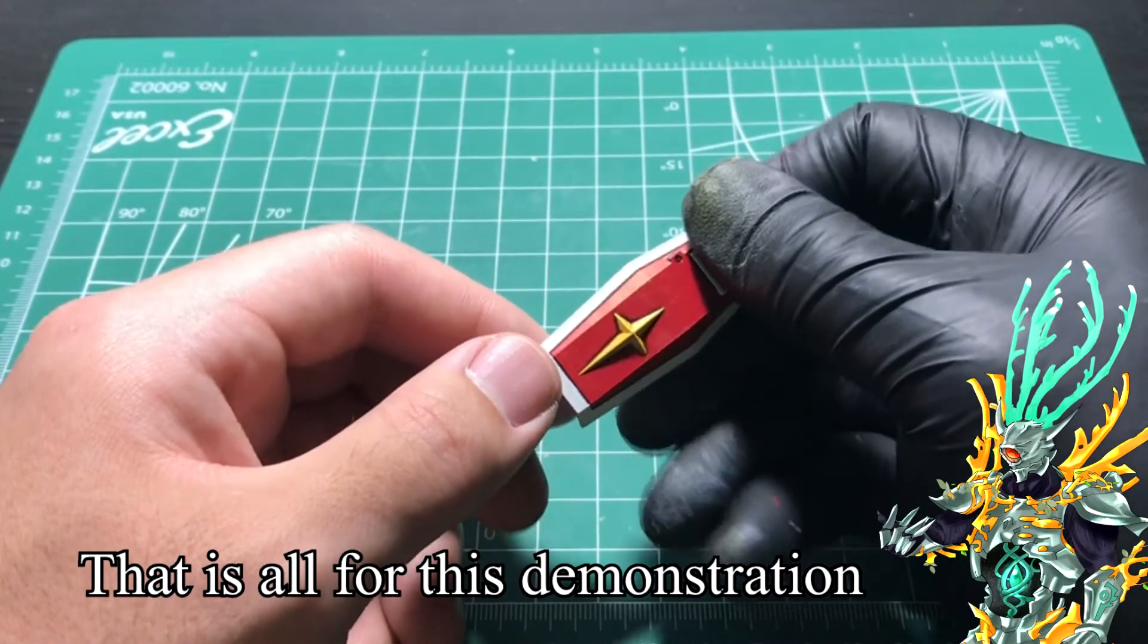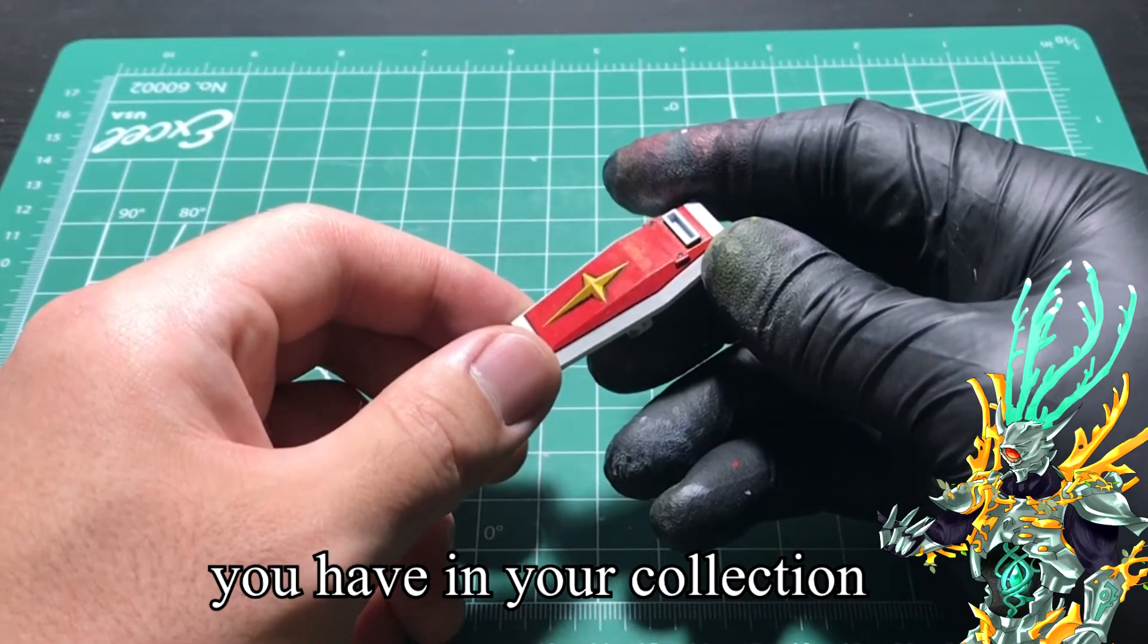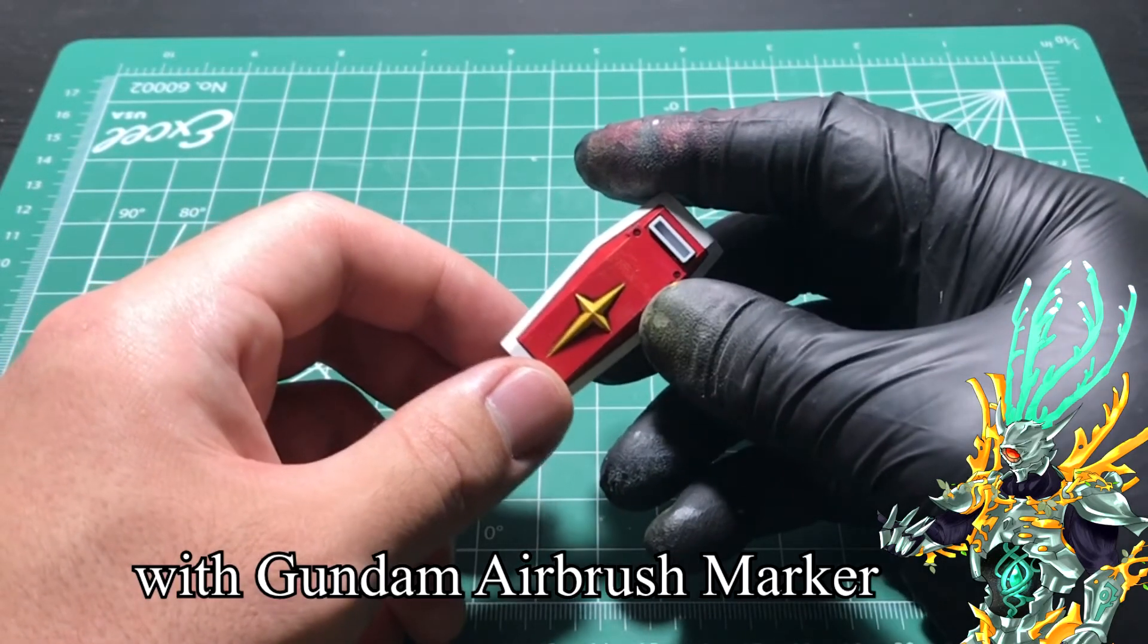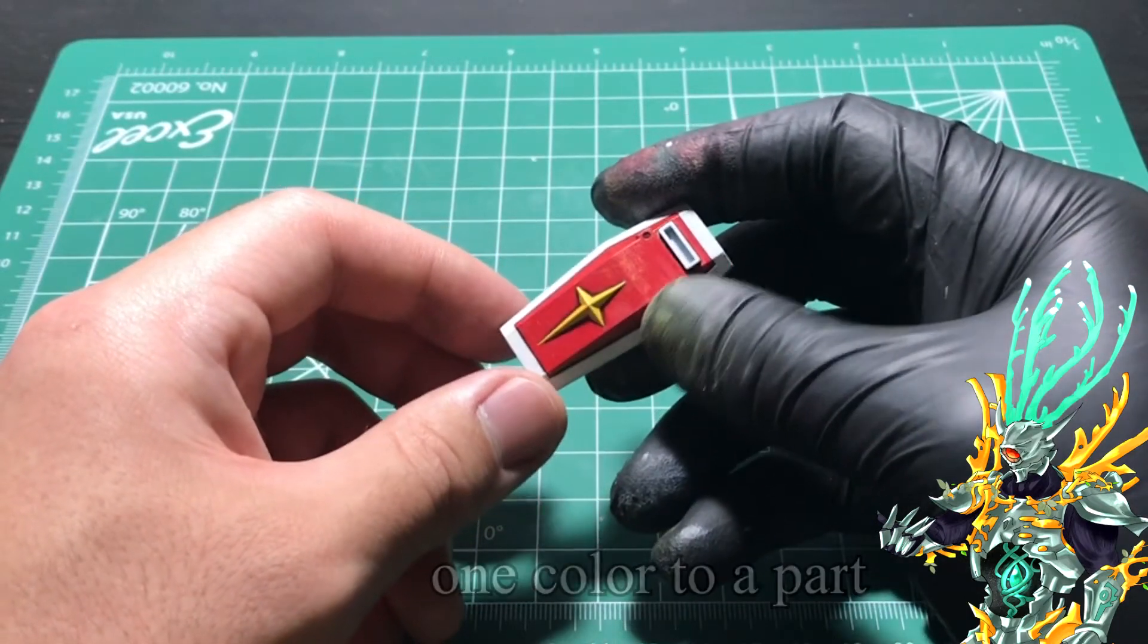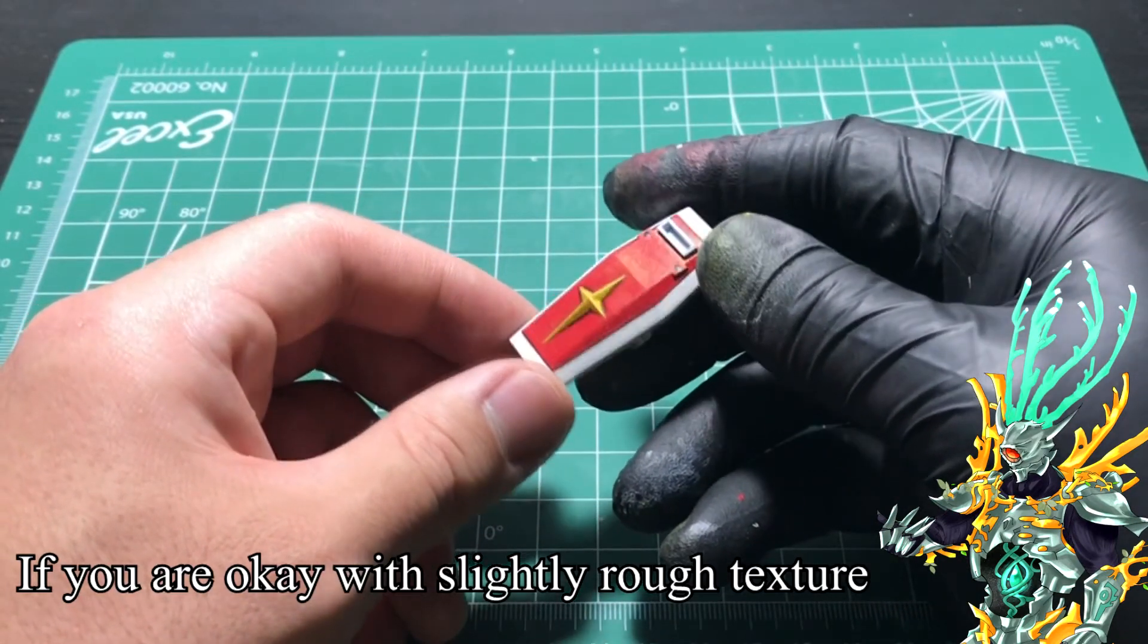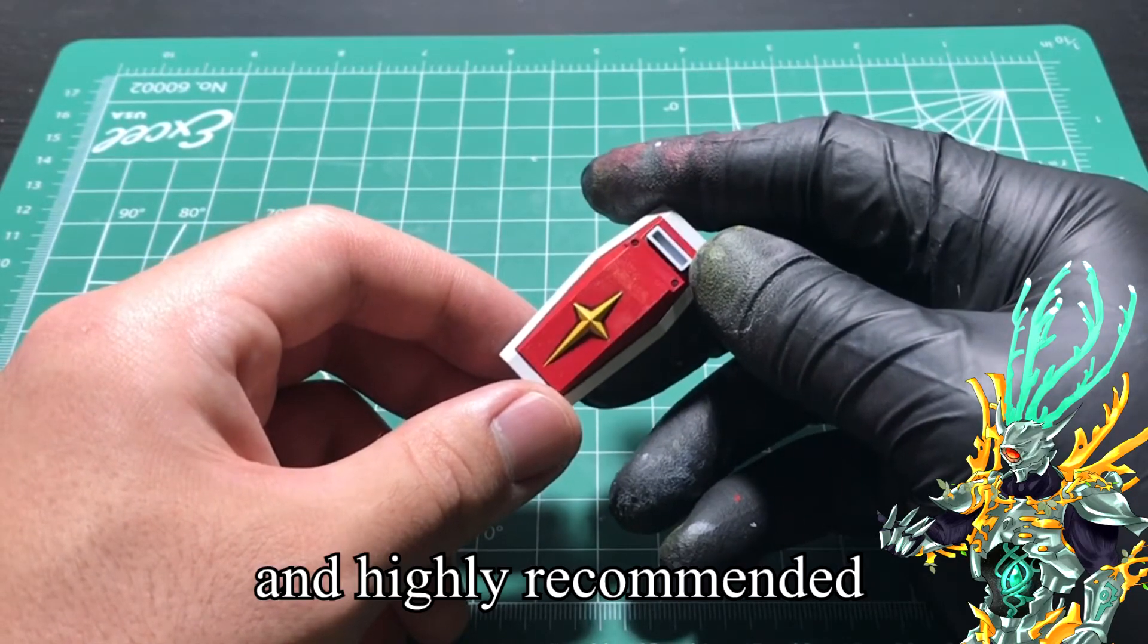That is all for this demonstration. What you saw in this demonstration can be used for any models you have in your collection. However, with Gundam Airbrush Marker, I do recommend just painting one color to a part. If you're okay with slight rough texture on the surface, then this setup is very cheap, easy to use, and highly recommended.